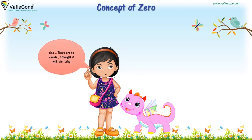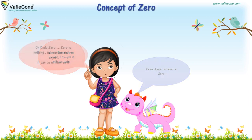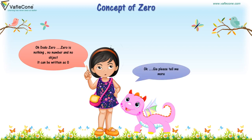I thought it will rain today. Yeah, no clouds. But what is zero? Zero is nothing — no number and no object. It can be written as zero. Okay, Chia, please tell me more.